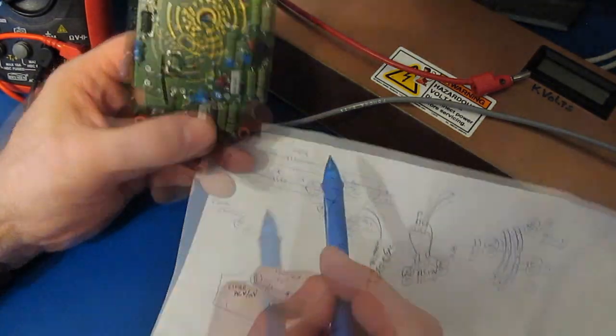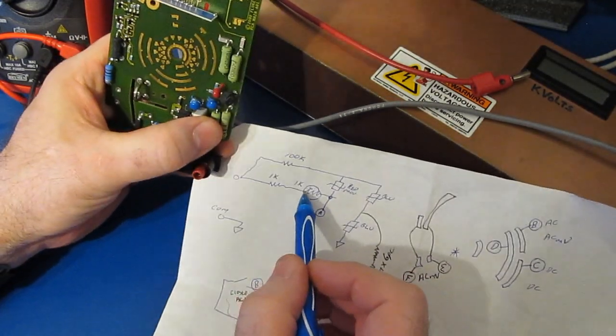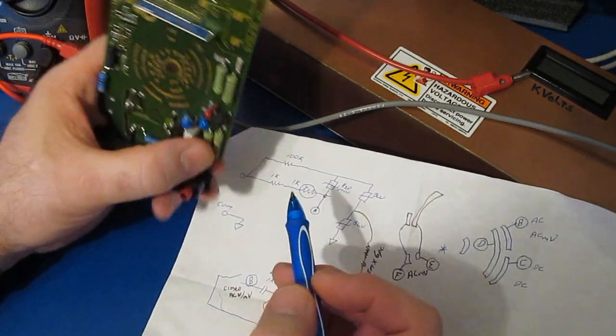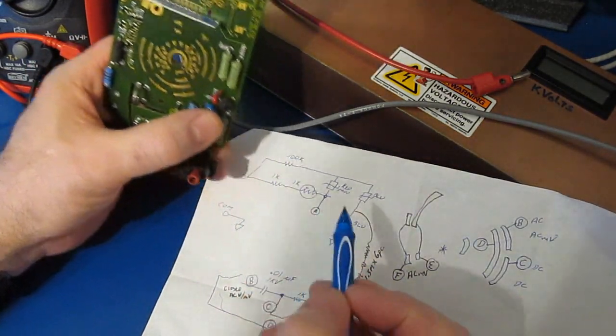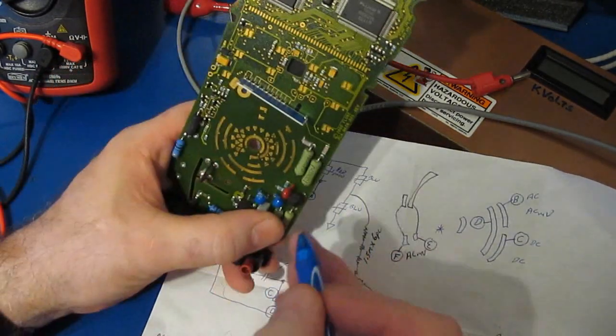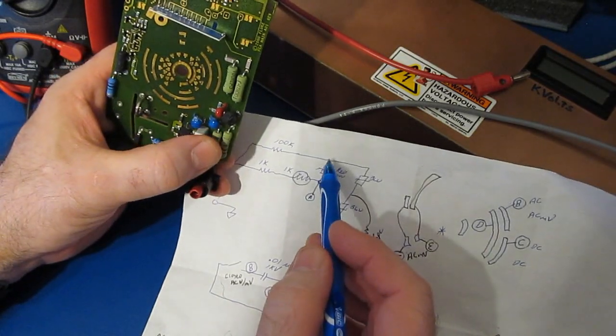That's this device here, and then that goes off to this red MOV, that's this device here. The other side of that goes over to this side of the 100k...